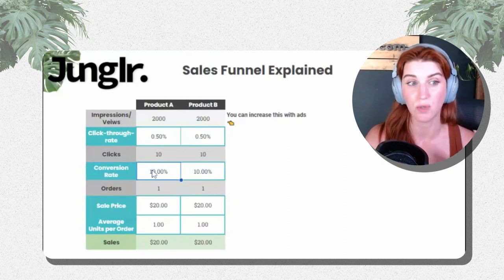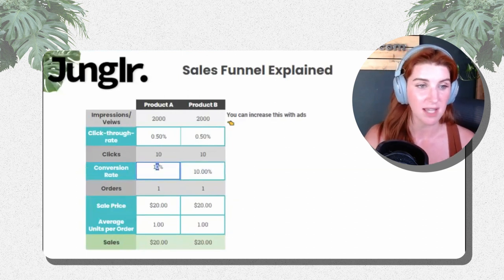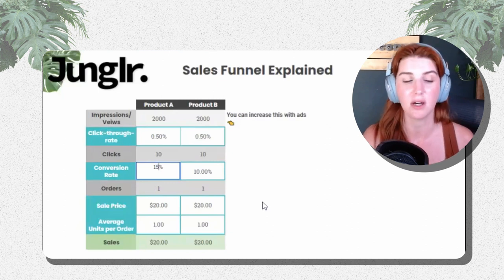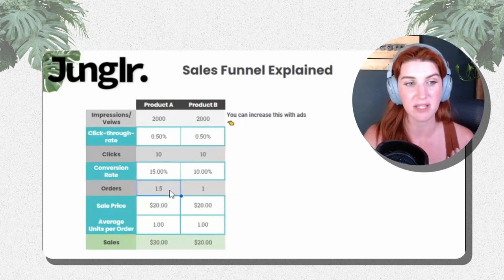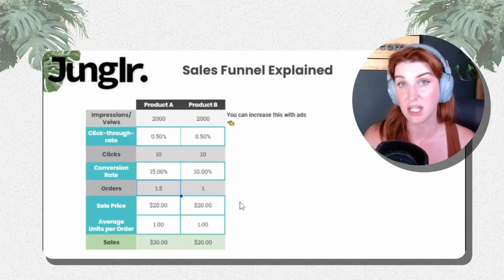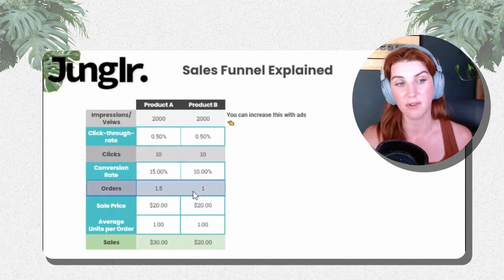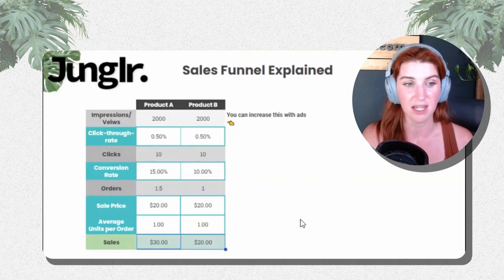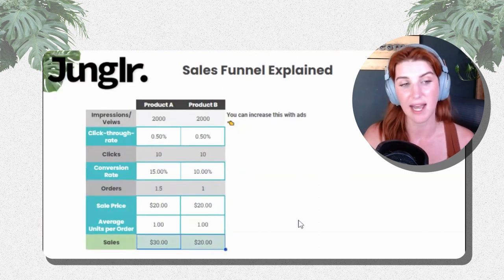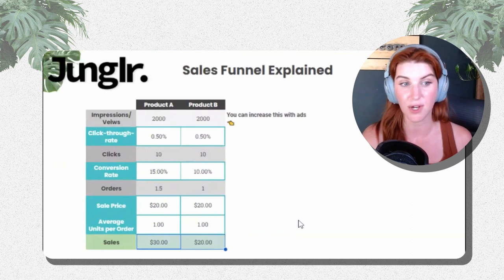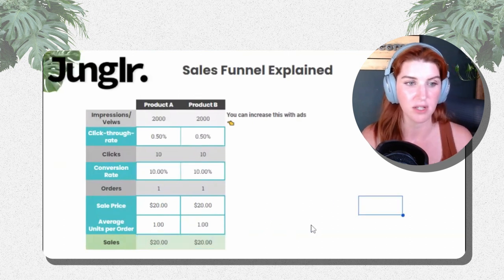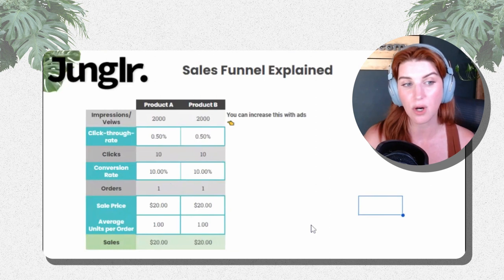Say we improved our conversion rate by 15% on Product A — everything else remaining equal — we get a 0.5% increase in the number of orders. You can see how that increases sales volume at the end of the day. Let's change this back to 10% and continue down the funnel.